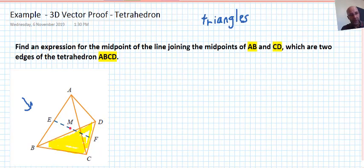So these proofs are a little bit more challenging. So we have to find an expression for the midpoint of the line joining the midpoints of AB and CD, which are two edges of the tetrahedron ABCD. So this question could be given to you with or without the diagram. It's certainly easier to get started with a diagram, but it would work no matter how you labelled it and no matter where you put A, B, C, D. So even allowing for a different diagram, we can still get this out.